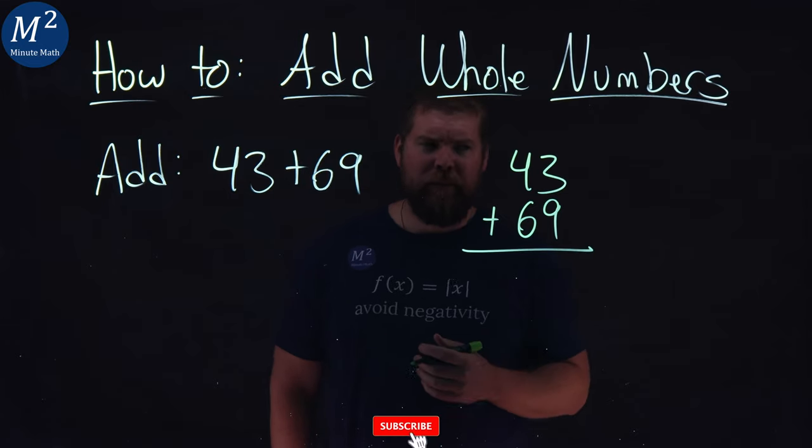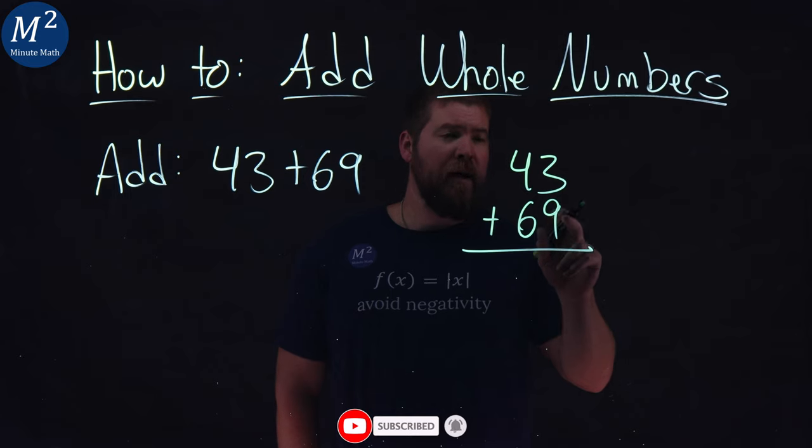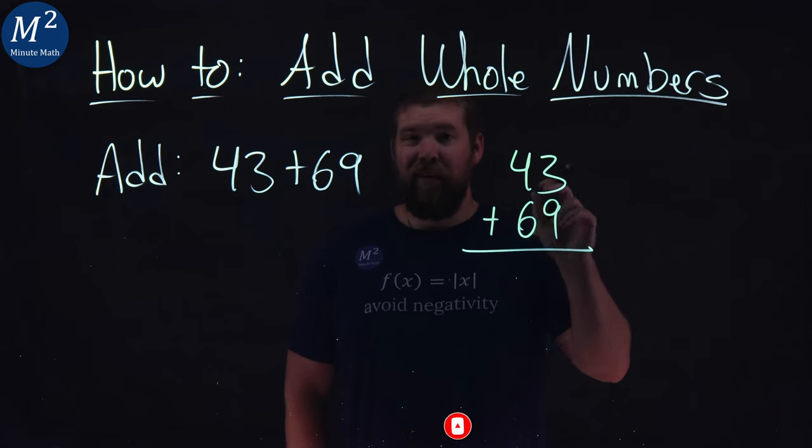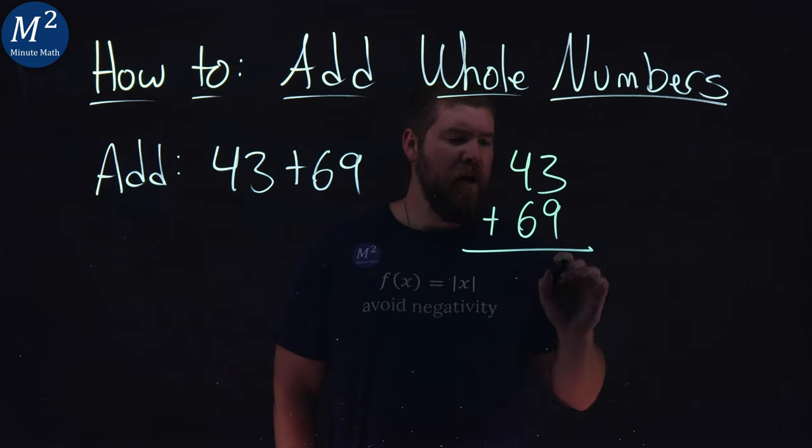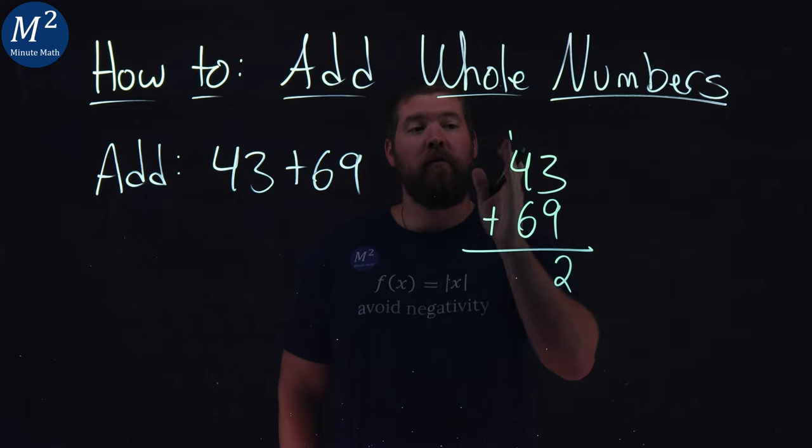This is our traditional method. Three and a nine we add together. So nine plus a three comes out to be a twelve. The two comes down here and we carry the one to be above the four.